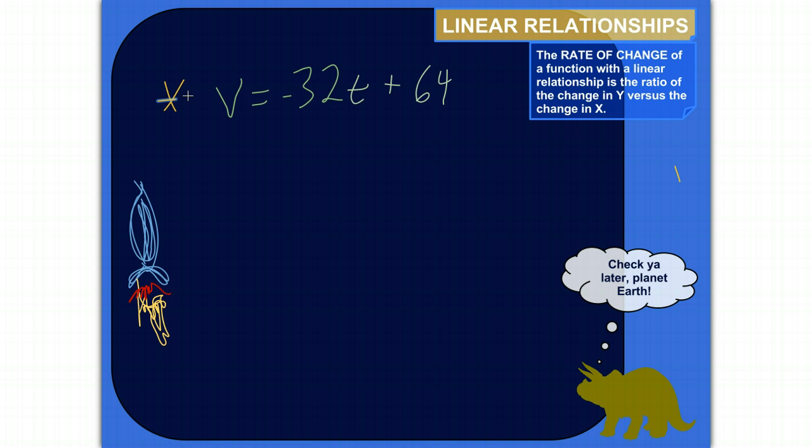And you can kind of tell that because the variables are first-degree variables. I don't have a t squared or t cubed or v to the fourth or anything like that. These are first-degree, and it's a function because there's two variables that are defined in terms of each other. So the relationship between them is defined by this equation.